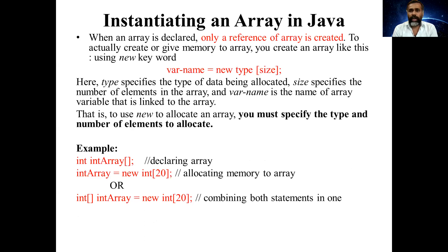Once you declare an array, memory is not yet assigned. To allocate memory you must instantiate the array using the 'new' keyword. The syntax for instantiation is: 'varName = new type[size]'. The type specifies the data type being allocated and size specifies the number of elements in the array. varName is the variable which you declared, linked to the allocated memory.